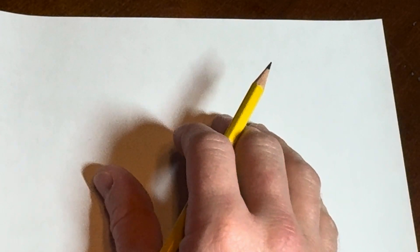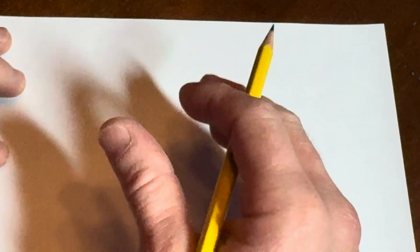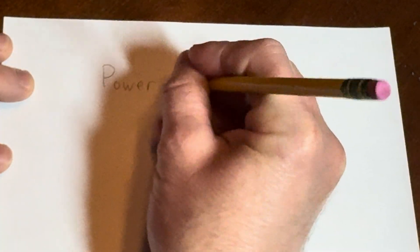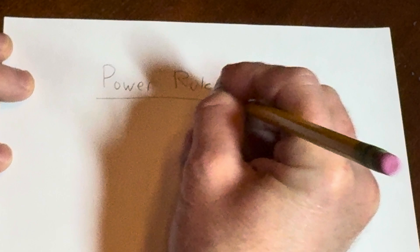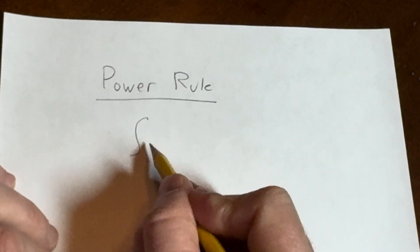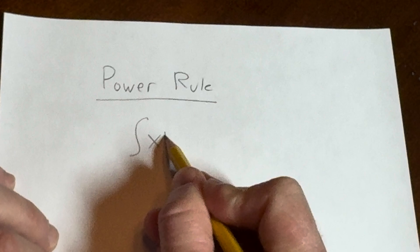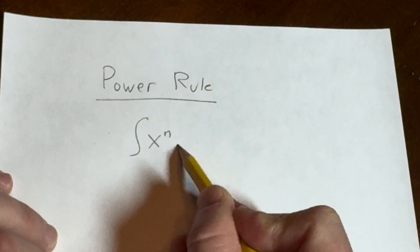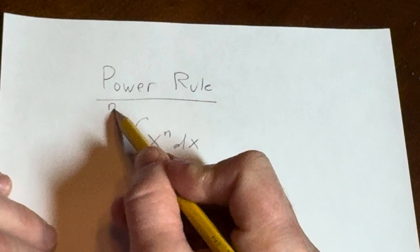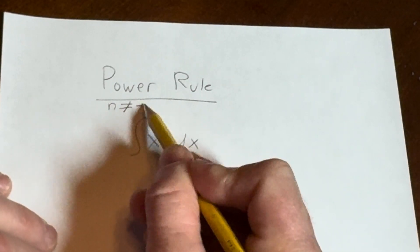In this video we are going to look at the basic power rule for integration. So the power rule says if you have the integral of x to a power with respect to x, so x to the n dx, and in all of this n is not equal to negative one.